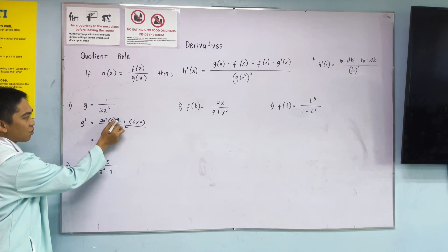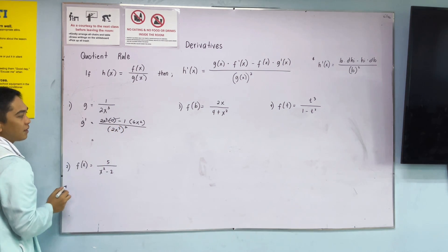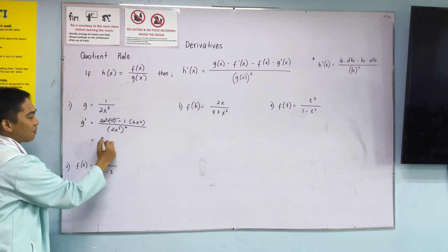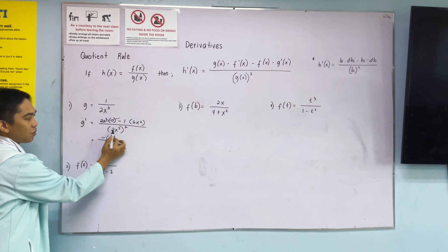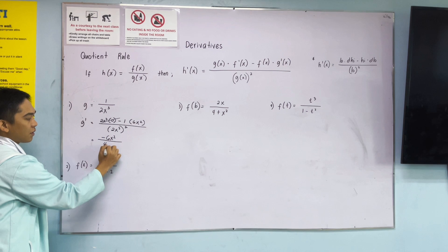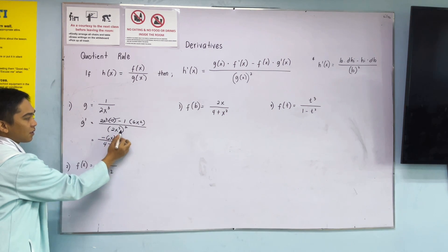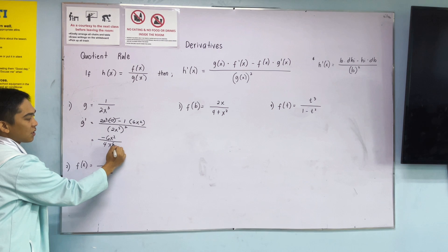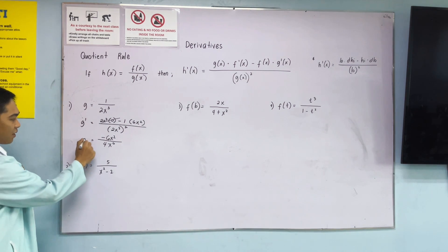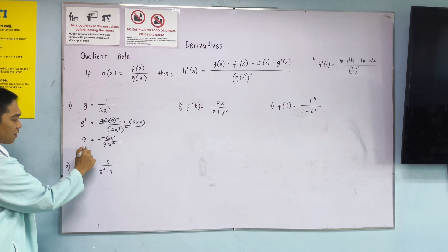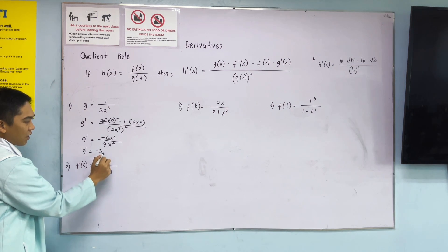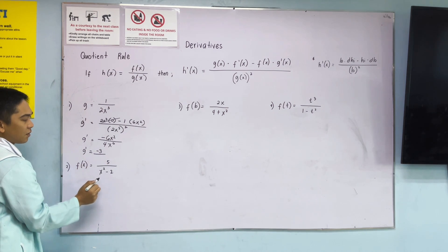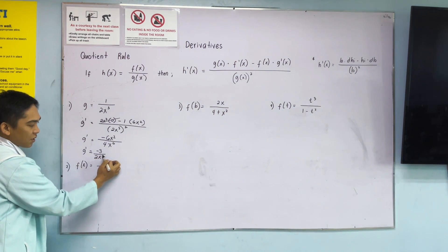Next: 0 times 2x cubed is 0. And now we have negative 1 times 6x squared, so 6x squared. All over 2 squared, which is 4. Then x — 3 times 2 is 6. Simplify for the final answer: negative 3, all over 2x to the 4. Since 2 minus 6 is negative 4, so this is 4.